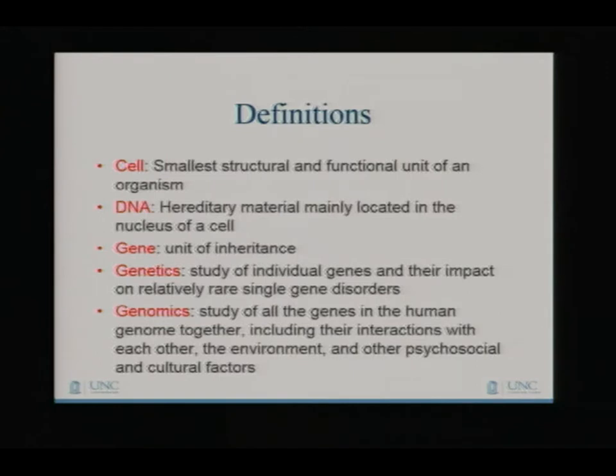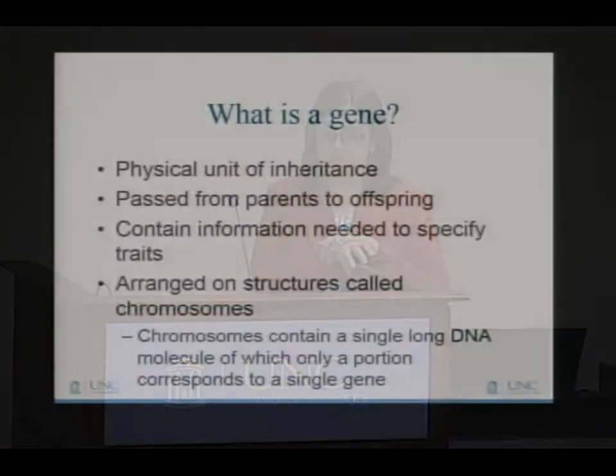These are all pretty important things when talking about genetics and what we inherit from our folks. What is a cell? It's the smallest structural and functional unit of an organism. DNA is hereditary material that's located in the nucleus of a cell. A gene is a unit of inheritance, and genetics is the study of those individual genes and how they impact us. A gene is a physical unit of inheritance passed on from parents to their offspring.